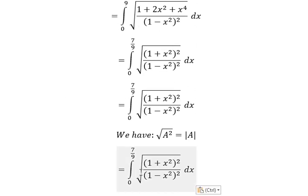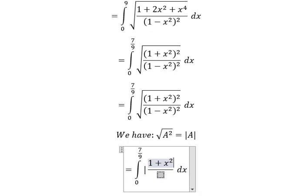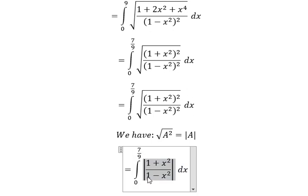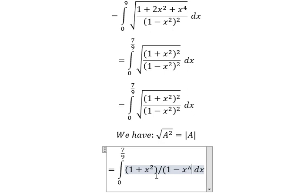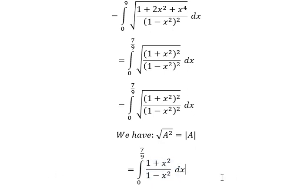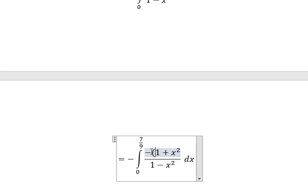So we need to convert this expression into this form. From (1 - x²), which is positive from 0 to 7/9, we can cancel the absolute value.